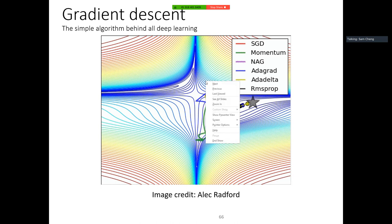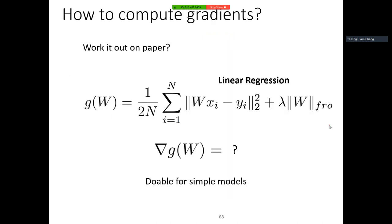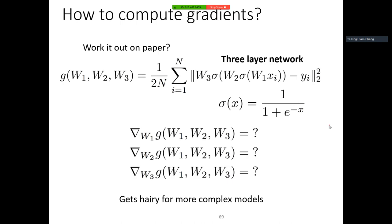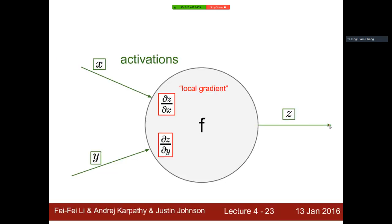If you use packages like PyTorch and TensorFlow, they will have these optimizers. What I want to do is go through a couple of backpropagation examples. Let's start with some very simple ones, maybe just to refresh your memory, then something a little more complicated.